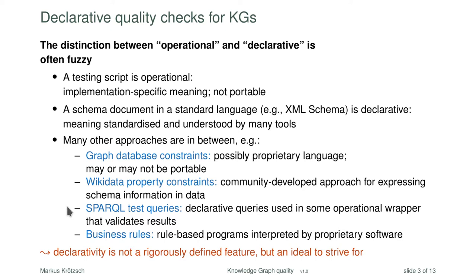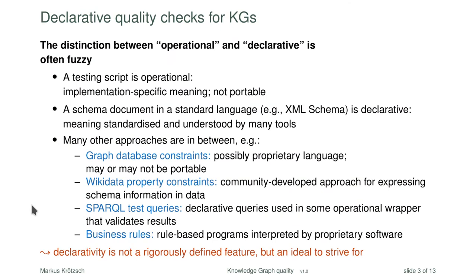SPARQL test queries are another option — you run queries to see if the results are what you expect, not just in SPARQL but in other query languages too. Queries are usually declarative, but you still need some operational wrapper to check whether the result was what you expected. There are also business rules, where a declarative programming language checks certain conditions interpreted by proprietary software. Declarativity is not a rigorously defined feature, but more like an ideal to strive for — the more declarative, the better in many cases.